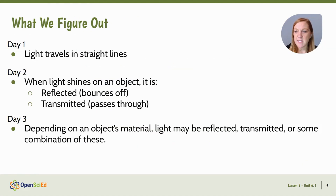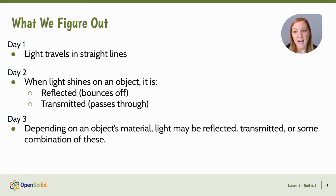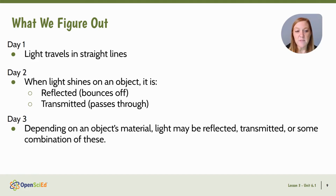On day one we figure out that light travels in straight lines, which reinforces learning from lesson two. On day two, we reinforce that when light shines on an object, it is reflected — bounces off — or it is transmitted, meaning it passes through. On day three, we determine that depending on an object's material, light may be reflected, transmitted, or both.